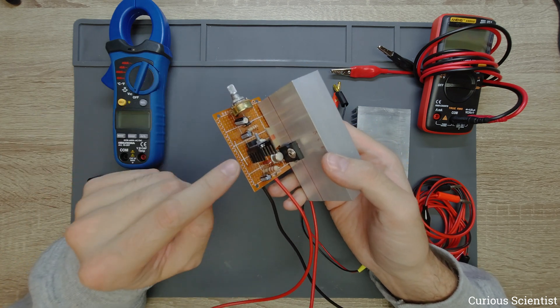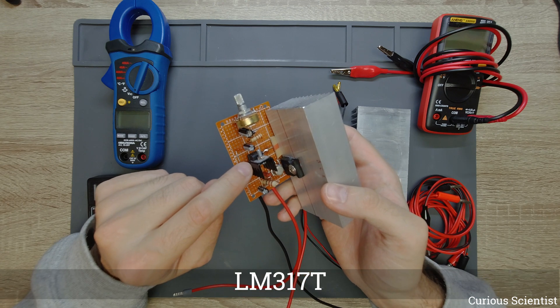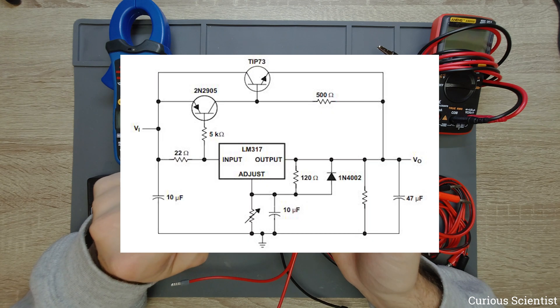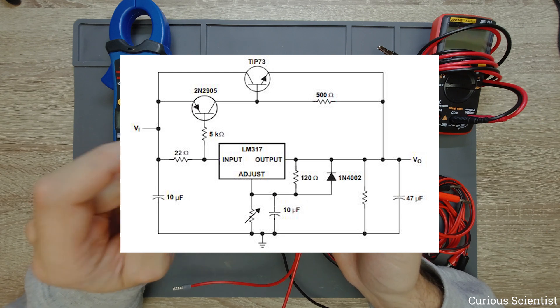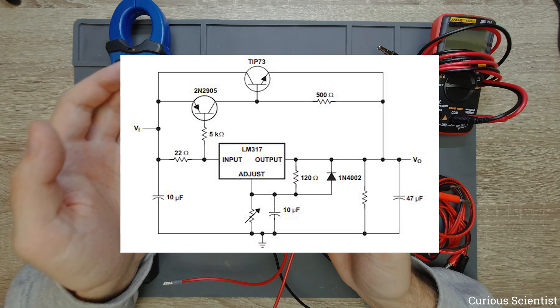The soul of this circuit is this chip here which is an LM317T voltage regulator chip. So this chip needs a few resistors, capacitors, maybe a potentiometer and it works very nicely.